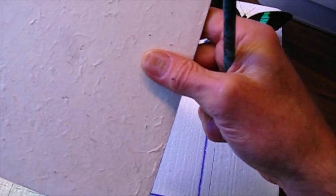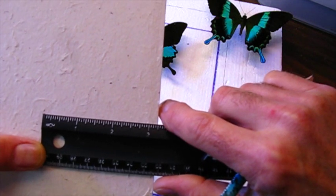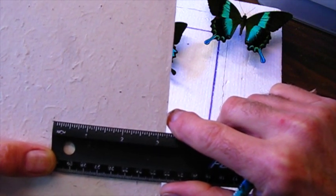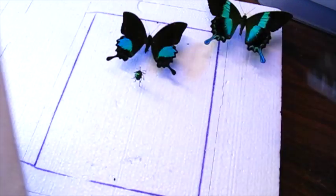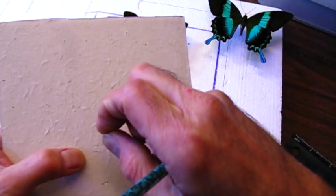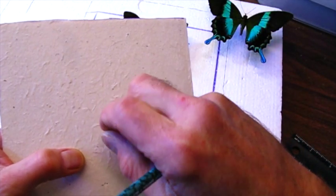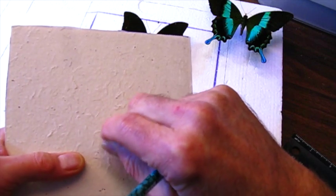So, we'll go to our foam core. Oh, three and three sixteenths. Sorry. Three and three sixteenths. Yeah. That checks out. So, the beetle pin goes right there.